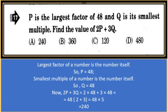P is the largest factor of 48 and Q is its smallest multiple. Find the value of 2P + 3Q. The largest factor of a number is the number itself, so P = 48. The smallest multiple of a number is the number itself, so Q = 48. Therefore, 2P + 3Q = 2×48 + 3×48 = 5×48 = 240.